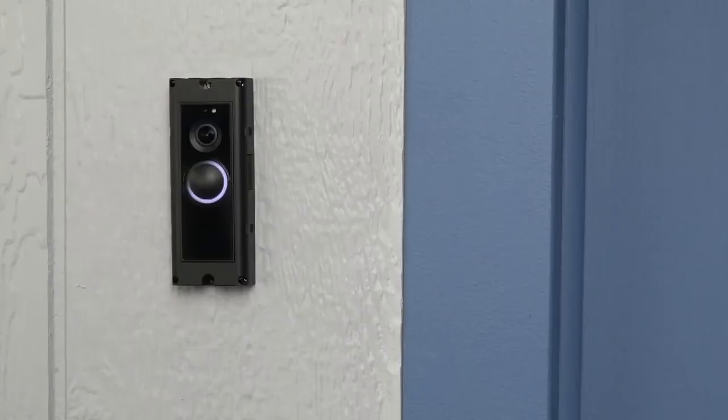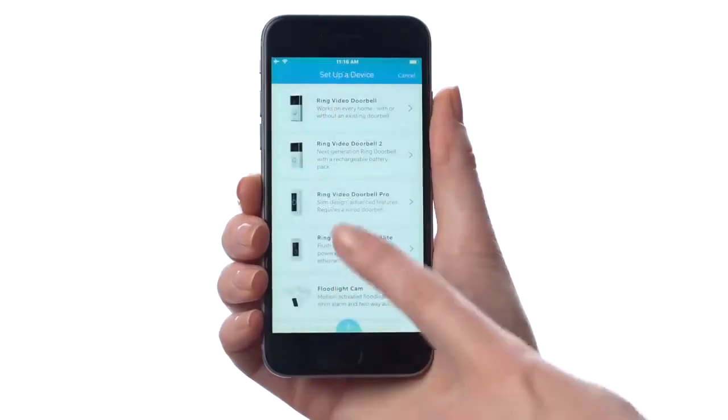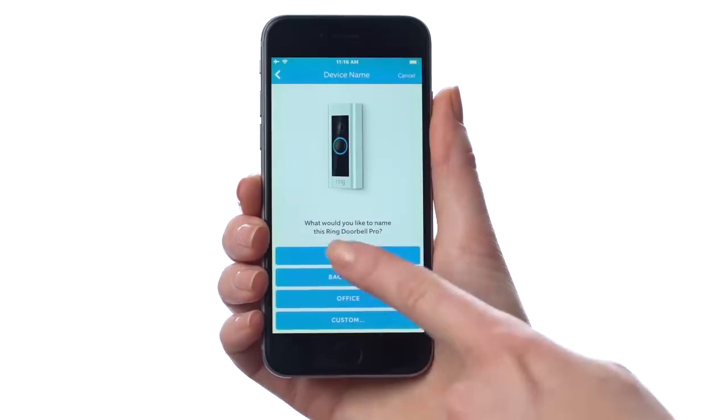If the lights show this type of pattern at first, that just means your doorbell is still preparing itself. Once all the lights are lit, it's done. Once it's ready, you can open the Ring app and follow the in-app instructions to complete the setup process.